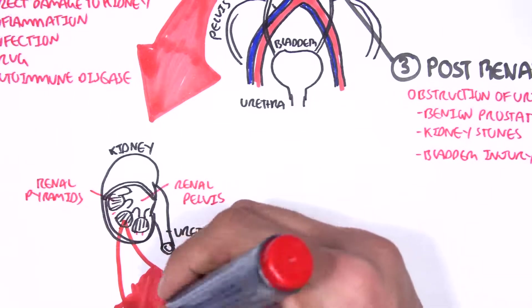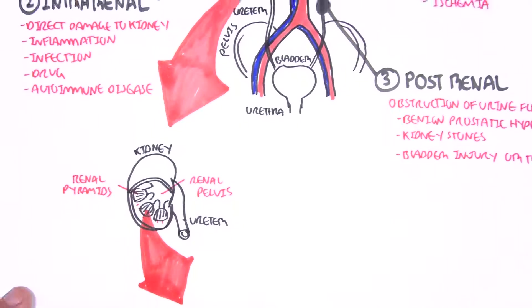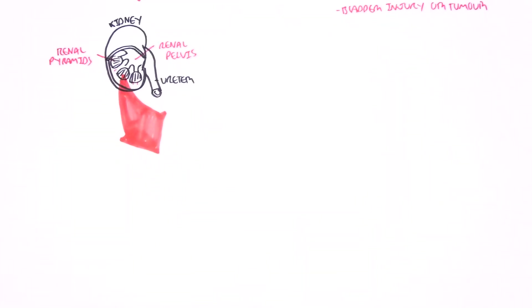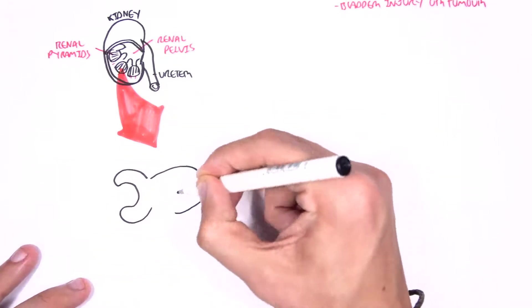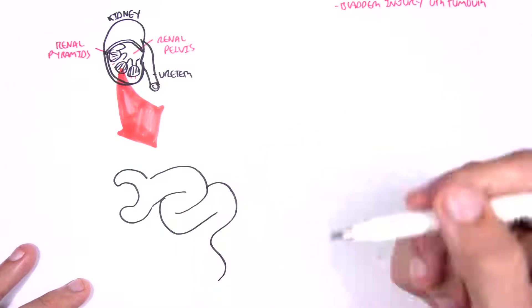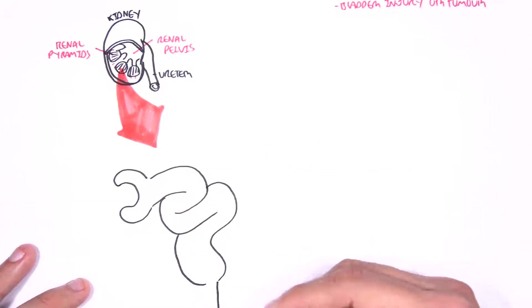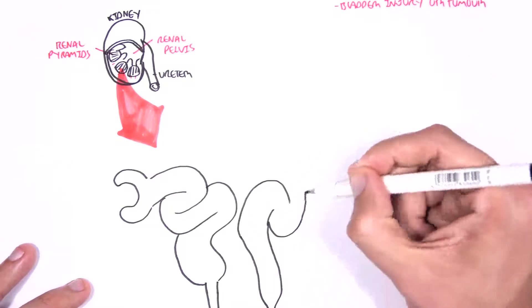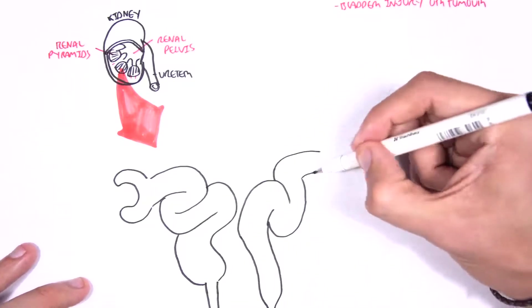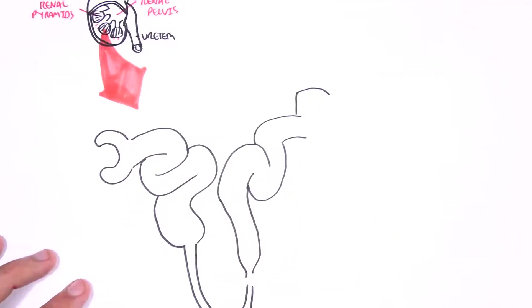Here I'm drawing one nephron. It has the head, which is the Bowman's capsule, then we have this convoluted part called the proximal convoluted tubules, which then forms the loop of Henle, then the distal convoluted tubules, and then the collecting ducts. Let us briefly look at the function of the kidneys, of the nephron.